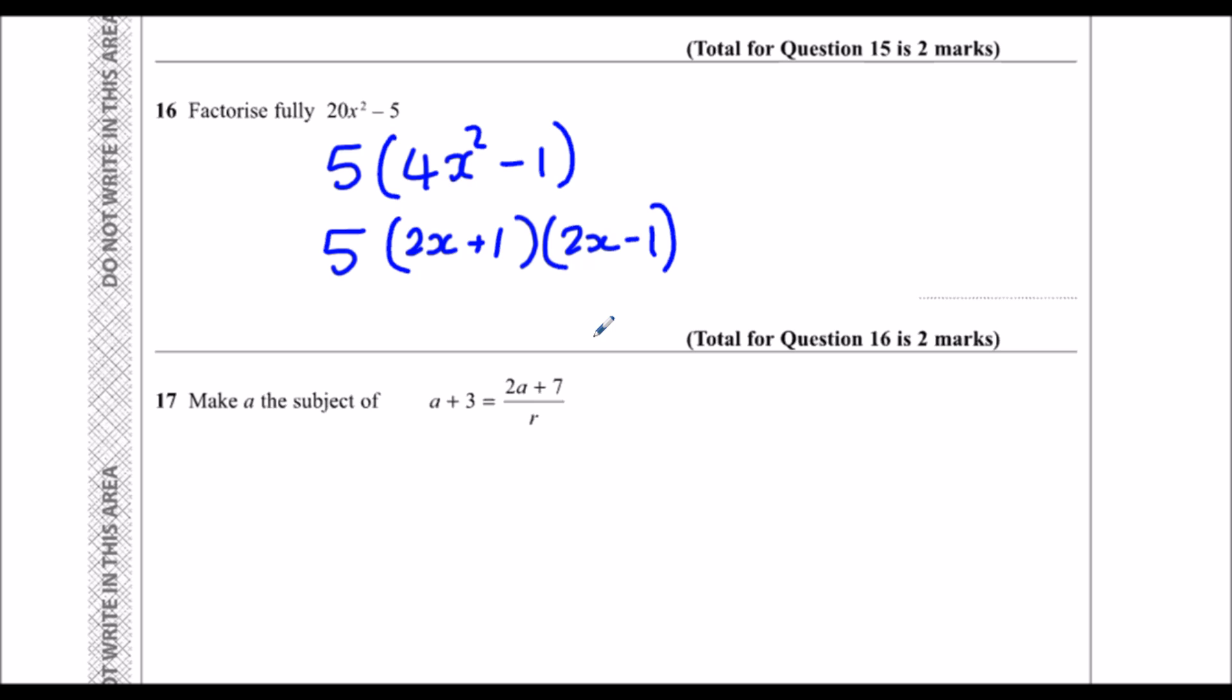Whenever you've got two square numbers with a minus in between, they can go into two separate brackets, one with a plus, one with a minus. So that is factorized fully. We've got 5, 2x plus 1, and 2x minus 1.